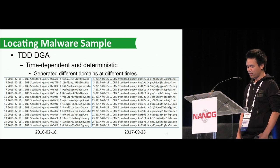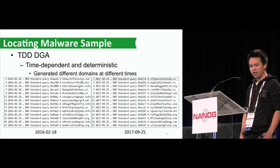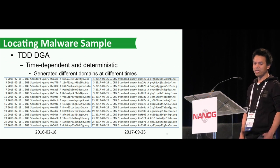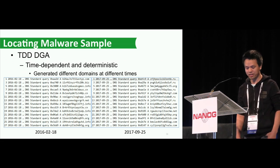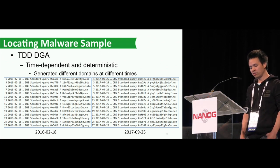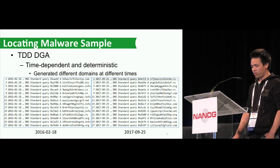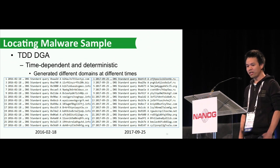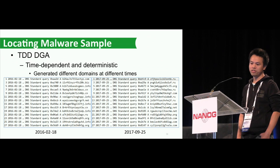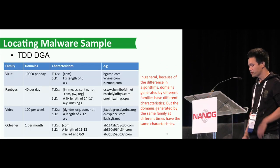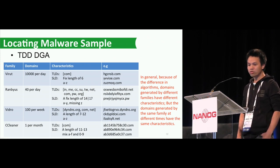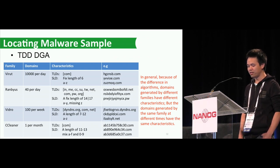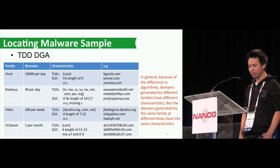Now let's take a look at TDD DGA. TDD stands for Time-Dependent and Deterministic — that means TDD DGA generates different domains at different times. Running a TDD DGA sample in the sandbox at different times shows that the domain list captured is totally different. The good thing is, although the domain names change all the time, domains generated by the same family will share some common patterns because the algorithms share the same logic. So we can use fuzzy matching later on.